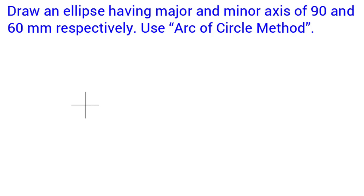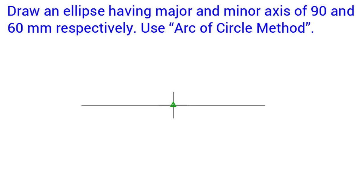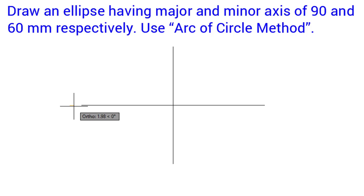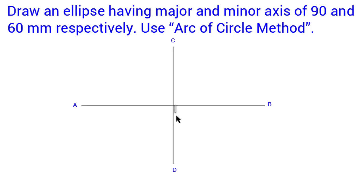As per the given data, draw a horizontal line of 90 mm and from the midpoint of that line draw a 30 mm line perpendicular towards the upward direction and from the same point draw a 30 mm line perpendicular towards the downward direction. We will name the endpoints of the major axis as point A and point B, and for the minor axis point C and point D.